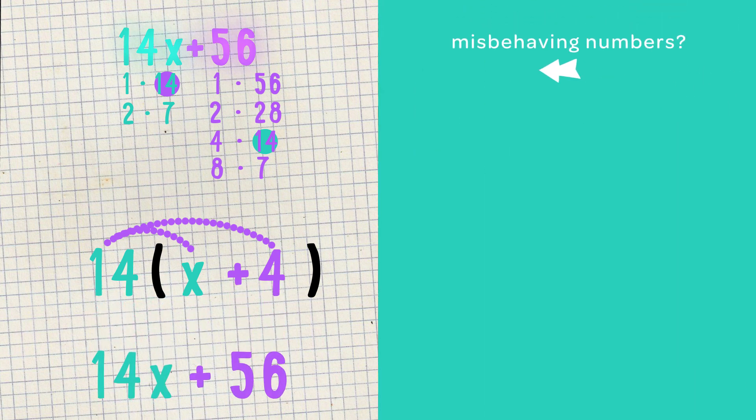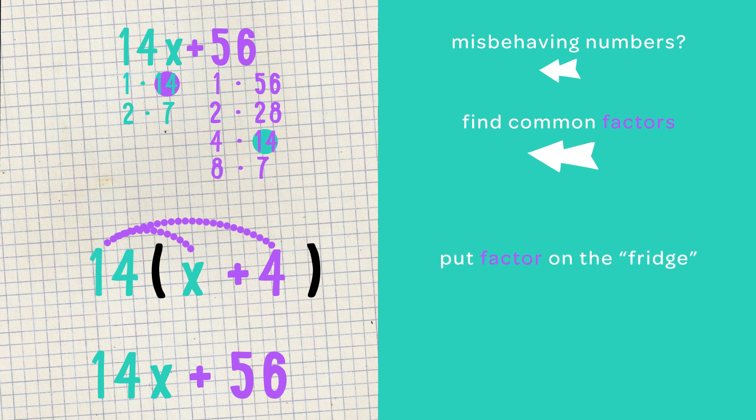So to recap, if you have a number that's misbehaving, factor it out and place it on the refrigerator by itself. Then put the misbehaving numbers in timeout mode with parentheses. To check your answer, redistribute and see if you end up in the same spot.